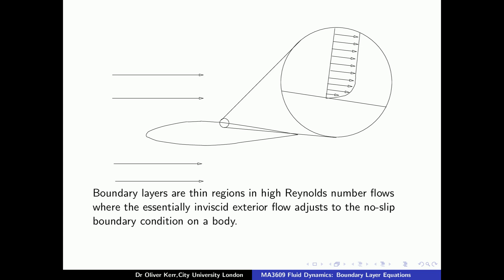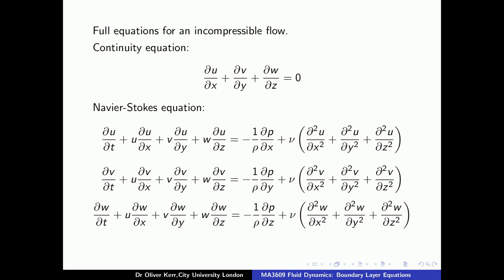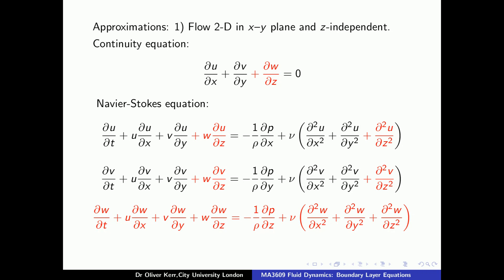Also, the flow will be essentially parallel to the wall, so the component of the velocity away from the wall will be much smaller than the components along the wall, both inside and outside the boundary layer. We assume the flow is both Newtonian and incompressible. Thus, the equations to be solved are the continuity equation and the three components of the Navier-Stokes equation. The first approximation that we make is that the flow is two-dimensional — it is independent of the z-coordinate and is parallel to the x-y-plane. This means that we can remove all terms involving either w or partial derivatives with respect to z.